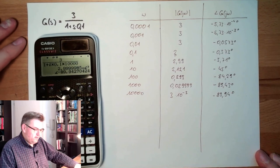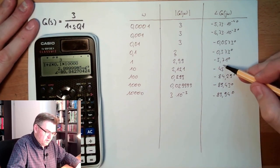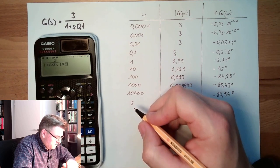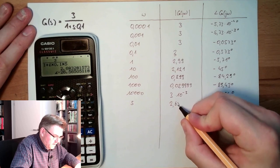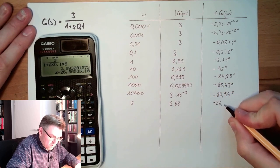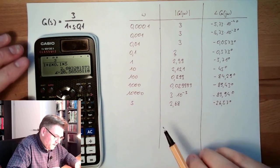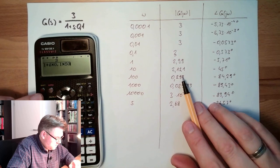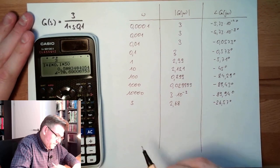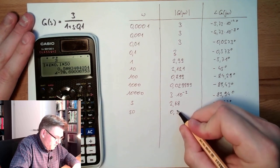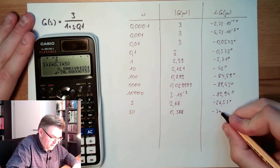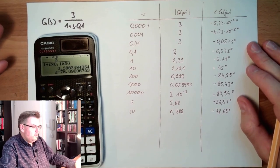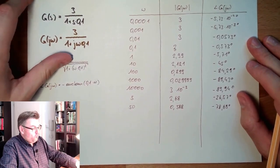Let's see where a lot of things change. Maybe we should calculate 5. There's quite a lot of change, so that's 2.68 and minus 26.57. And there's also a lot happening here, let's calculate 50 as well. 50 means 0.588 and minus 78.69. So this is the table now. With this table, I can draw the Bode plot.